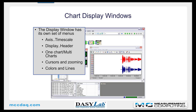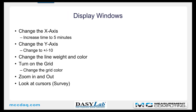Now that we have a chart recorder, let's talk about the chart display windows. Much of this also applies to the YT chart, the XY chart, and the polar plot module. The display window has its own set of menus including the axis menu, which includes the time scale and Y axis settings. You can display a header on the chart recorder, change it from one chart to multiple charts, do cursors and zooming, and change the colors and lines. I want to play with the display windows — changing the X and Y axis, the line weight and color, turning on the grid, changing the grid color, and zooming in and out.